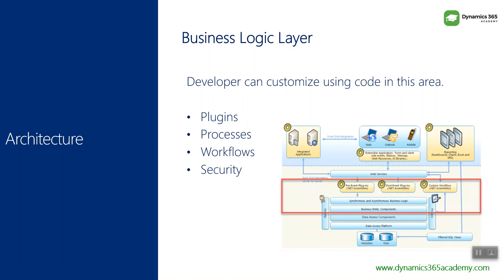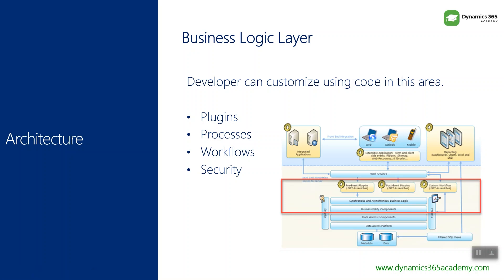We will be developing plugins and custom workflow activities. Similarly, workflows can be customized with the help of code; we call these custom workflow activities. You develop the code, create it as a .NET assembly, register it with the server, and extend workflows as well. We also have synchronous and asynchronous business logic — any process such as a plugin or workflow can be triggered synchronously or asynchronously, and this is managed by this part of the architecture. Then we have business entity components — every entity has a schema stored in XML format, with 400-plus standard entities plus custom entities all residing here.